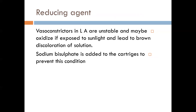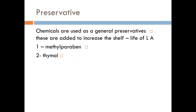The vasoconstrictors in the cartridge are protected from being exposed to sunlight. The reducing agents in the cartridge are sodium bisulfate. Preservative agents are also included — all drugs available use a preservative agent to maintain the shelf life of the drug. Similarly, local anesthetic agents are available with preservative agents such as methylparaben and thymol.